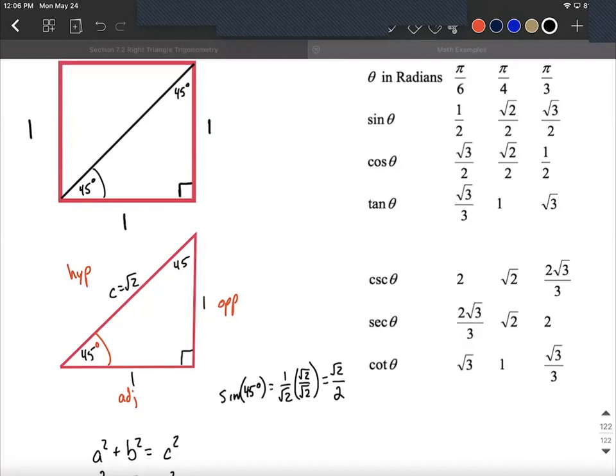We can also do a very similar computation for getting cosine, which would be adjacent over hypotenuse. So again you get one over the square root of two, same thing here, that's where the square root of two over two comes from.